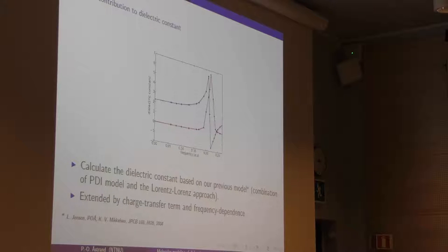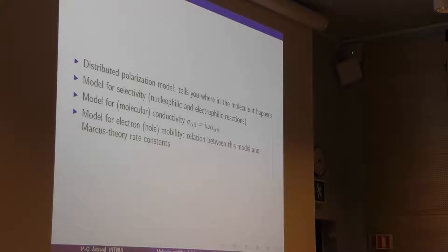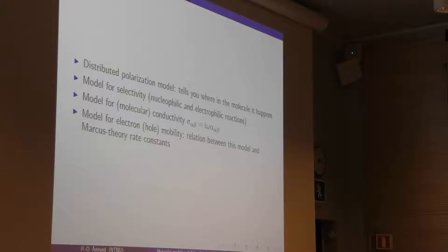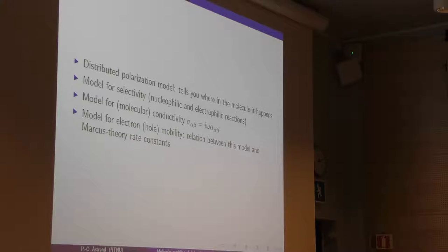To summarize, I've presented a distributed polarization model, which tells you where in the molecule things happen because it's a sum of atomic contributions. We can identify where the contributions come from. I would suggest moving towards physical organic chemistry — about selectivity — because you can rephrase these equations to get reactivity indexes like the Fukui index, which would tell you what's likely in the molecule to have either nucleophilic or electrophilic attack. I don't know if it works for that, but if someone has interesting systems where they need to compare.